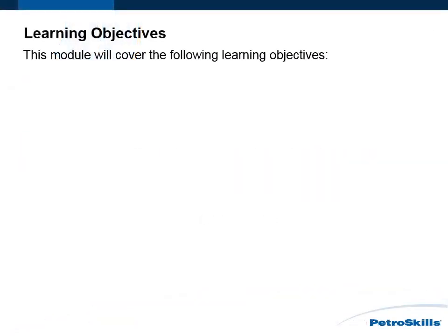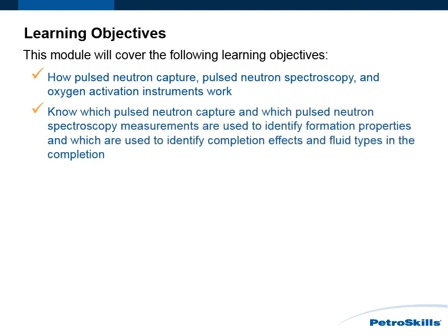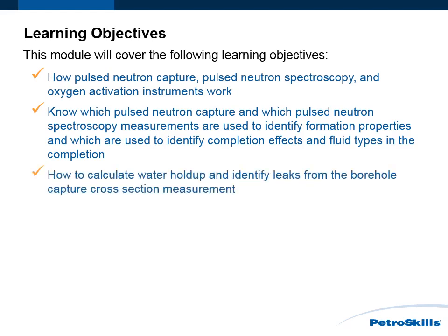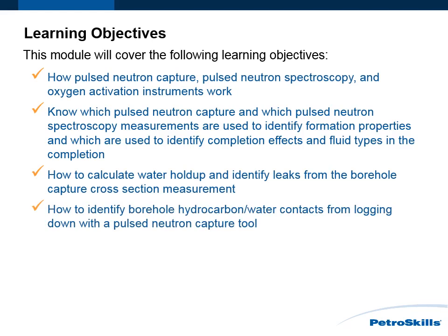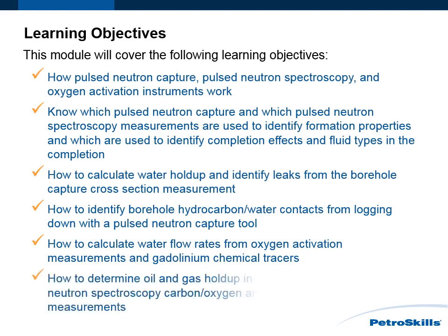This module will cover the following learning objectives: how Pulse Neutron Capture, Pulse Neutron Spectroscopy, and Oxygen Activation instruments work; which Pulse Neutron Capture and Pulse Neutron Spectroscopy measurements are used to identify formation properties and which are used to identify completion effects and fluid types in the completion; how to calculate water holdup and identify leaks from the borehole capture cross-section measurement; how to identify borehole hydrocarbon to water contacts from logging down with the Pulse Neutron Capture Tool; how to calculate water flow rates from Oxygen Activation Measurements and Gadolinium Chemical Tracers; how to determine oil and gas holdup in the completion from Pulse Neutron Spectroscopy, Carbon-Oxygen and Inelastic Count Rate Ratio measurements.